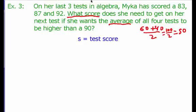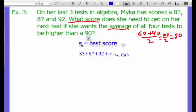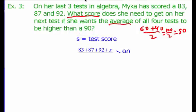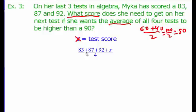To find the average of the four tests, we add 83 plus 87 plus 92 plus X, and divide by 4. The word "higher" from our chart tells us to use the greater than symbol. So our inequality is: (83 + 87 + 92 + X) ÷ 4 > 90. We first combine like terms in the numerator: 83 + 87 + 92 = 262, giving us (262 + X) ÷ 4 > 90.